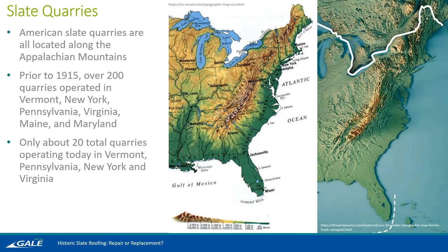Slate forms during mountain formation. In the U.S., that is typically along the Appalachian Mountains on the east coast. Prior to 1915, there were over 200 quarries operating all up and down the mountain chain. Nowadays, there are only about 20 total currently operating, primarily in the northeast region, with Vermont being one of the biggest modern-day producers of slate.